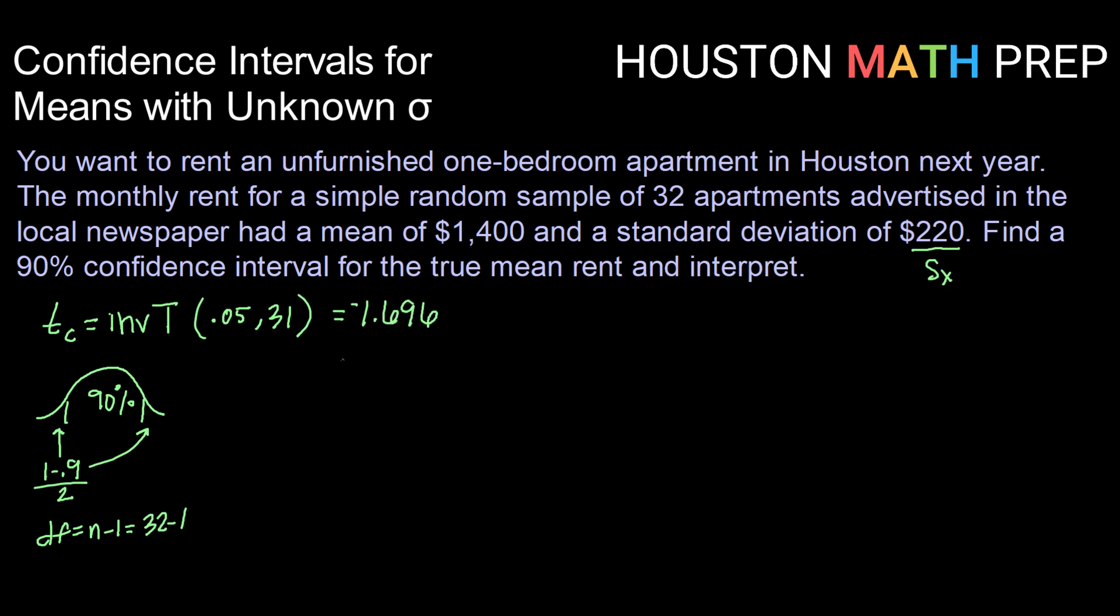Now, technically, your calculator is going to give you the minus version of that, but we are always going to use the positive version for our T critical. Now, our confidence interval can be calculated by taking our point estimate of x-bar and adding and subtracting to that our T critical value times our standard deviation divided by the square root of n.